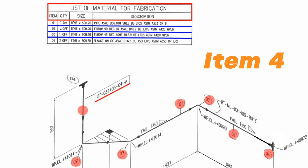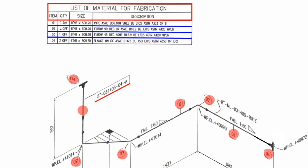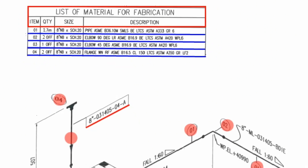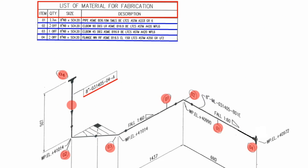Item number 4 is shown in two places of this pipeline drawing. Item number 4: quantities 2-off, size 8-inch, schedule 20, flange, weld neck, raised face, ASME B16.5, class 150, low-temperature carbon steel materials, ASTM A350. The bill of materials learning is now completed.